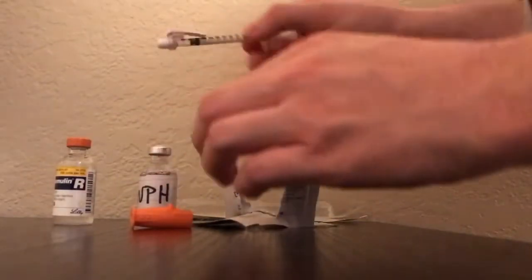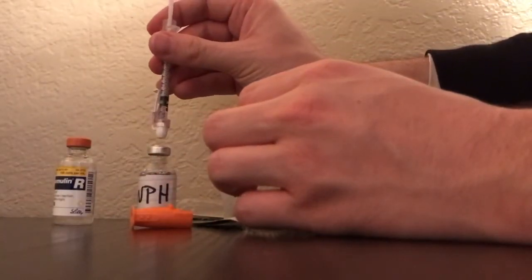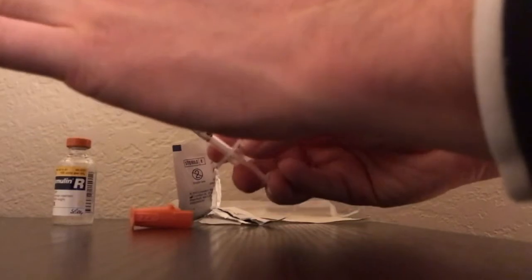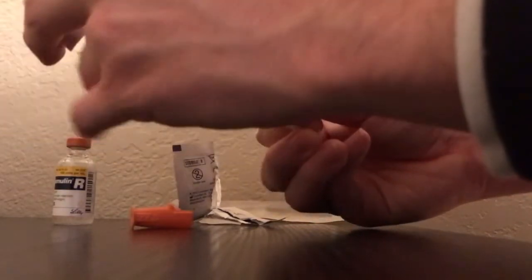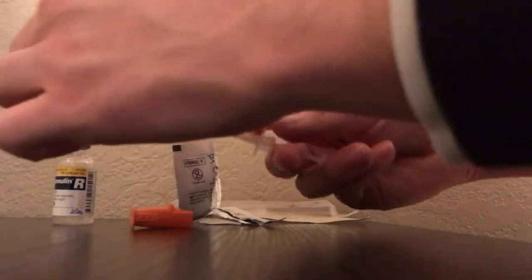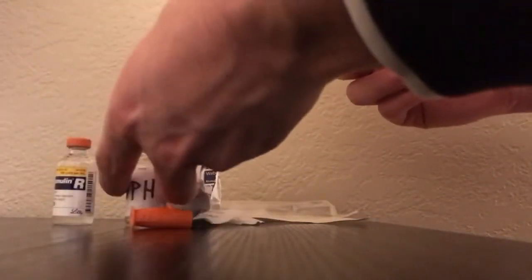Grab your NPH cloudy solution, place it in there, and withdraw 10 units. After you've got both solutions mixed in there, verify with another nurse to make sure everything is up to par—same order, same dose. Label your syringe and take it to the patient's room.